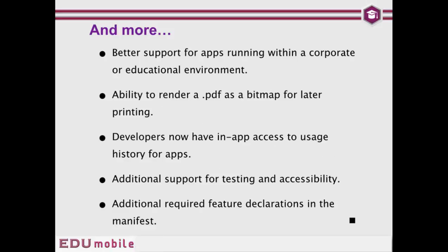There's a lot more. There's better support for apps that run within a corporate or educational environment. There's the ability to render a PDF as a bitmap for later printing. We now have in-app access to the usage history for an application so we can tell how the user is using it. There is additional support for testing frameworks and accessibility, and we now have additional required feature declarations in the manifest to ensure users don't attempt to use our app on a device that lacks the necessary hardware or features.